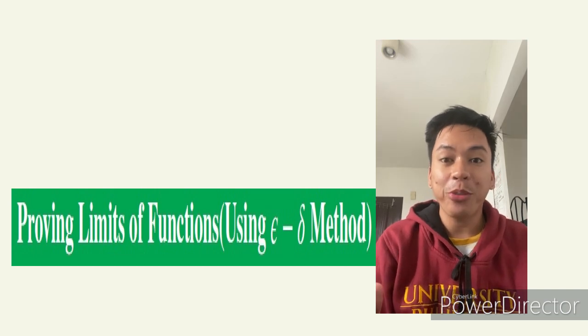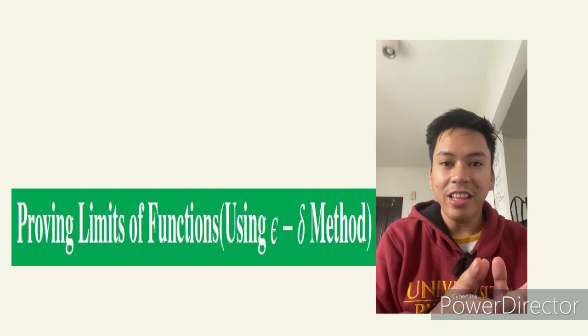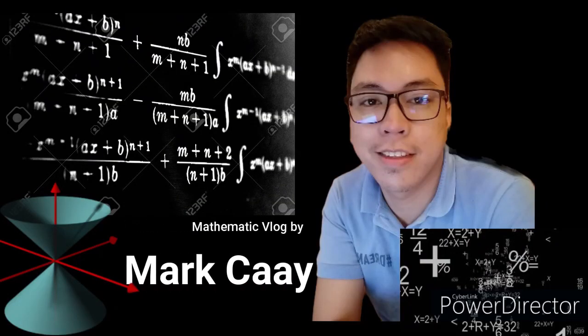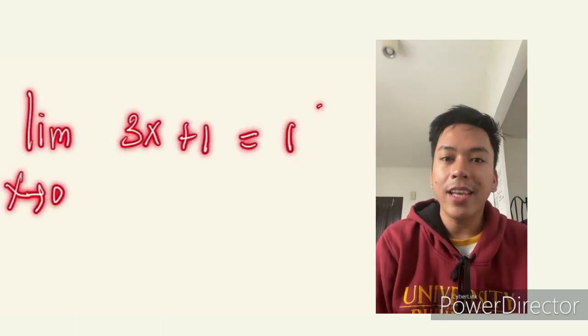Hi, welcome back to my channel. For today's video, we will be talking about how to prove that a number is a limit of a function as x approaches a certain value. We will talk about the algorithm for proving that a given value is the limit of a function as x approaches a given point using the delta-epsilon method.